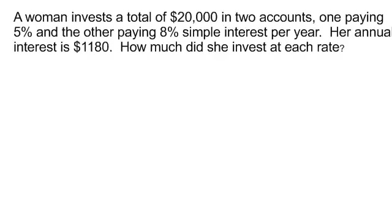A woman invests a total of $20,000 in two accounts, one paying 5% and the other paying 8% simple interest per year. Her annual interest is $1,180. How much does she invest at each rate?